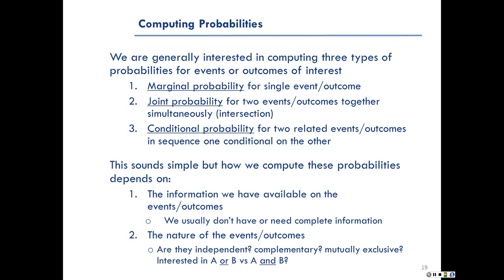How we compute these probabilities depends on two things. First is simply the information we have available on our events or outcomes of interest. We usually don't have complete information, but fortunately we don't need the complete information either. Secondly, it has to do with the actual nature of our events or outcomes of interest — are they independent, complementary, mutually exclusive? Are we interested in A or B versus A and B together? All these things are going to determine how we actually compute the probabilities.